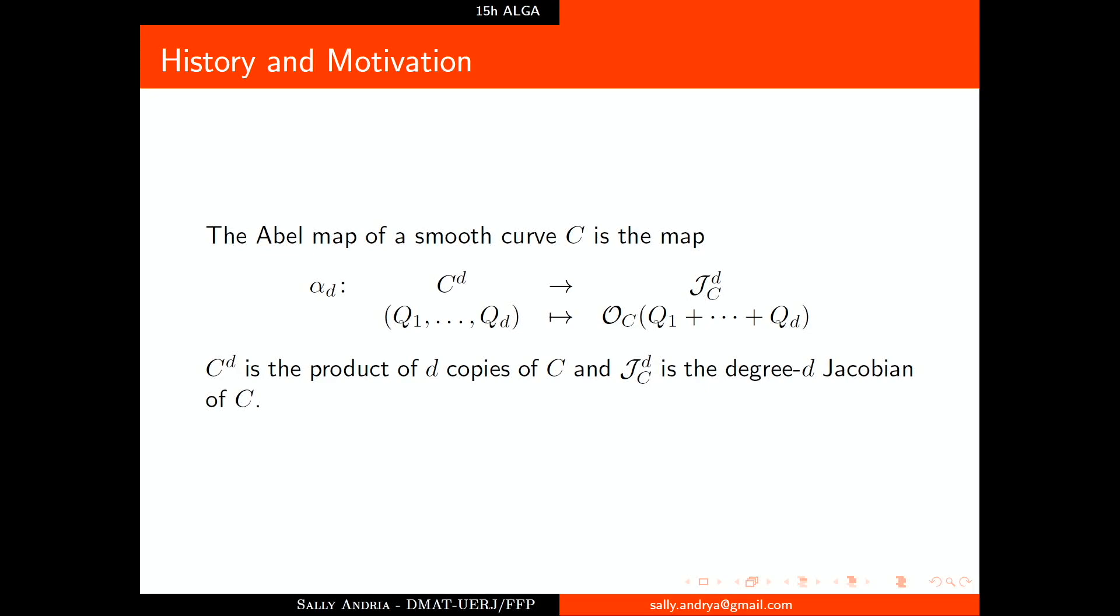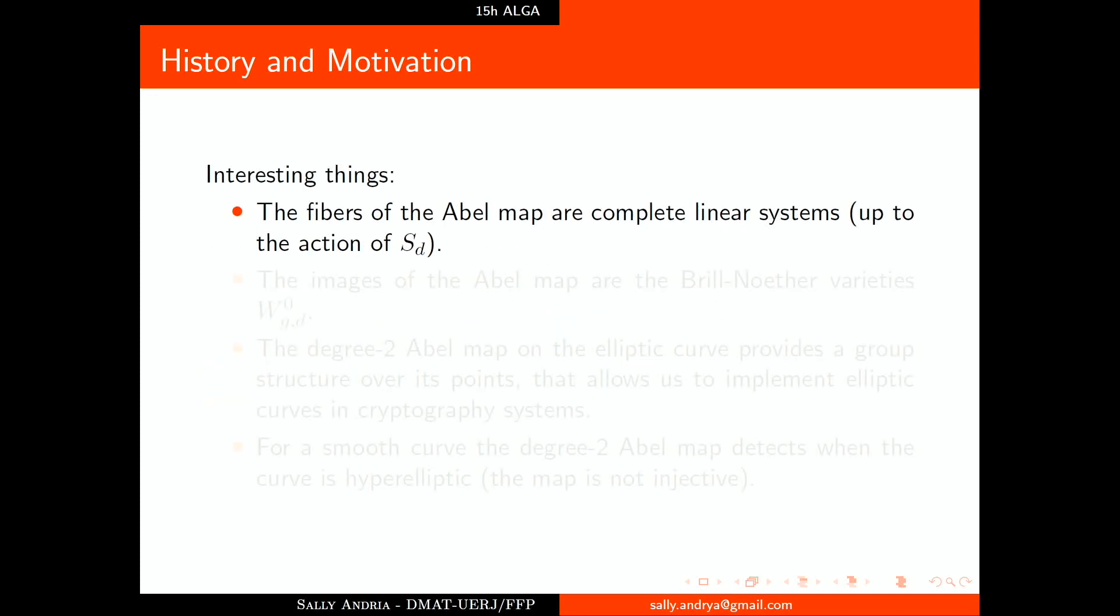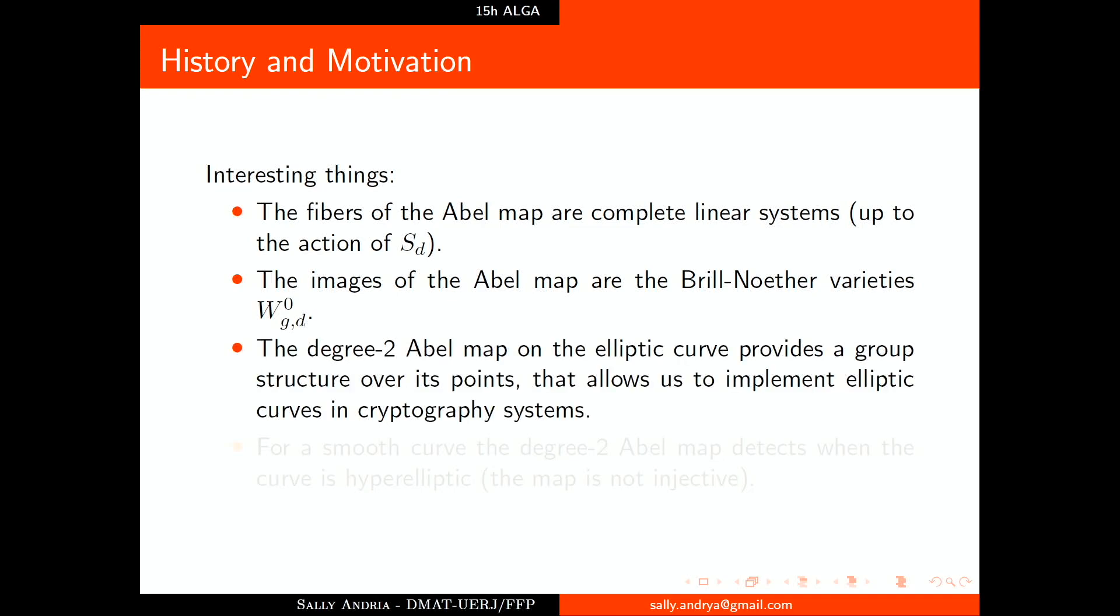The Abel map for a smooth curve is the map which takes d-tuples of points in the product of d copies of C into the sheaf associated to the sum of these points. What is interesting with this map is that it's related to complete linear systems, brilliant rights, and is hidden in elliptic cryptosystems. For a smooth curve, the degree 2 Abel map detects when the curve is hyperelliptic.